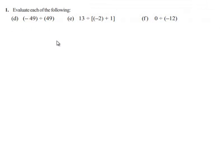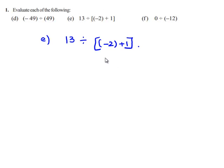We'll see the fifth problem. The question given is 13 divided by negative 2 plus 1, within the brackets. First, we'll solve the values within the brackets. That is, negative 2 plus 1, which gives negative 1.